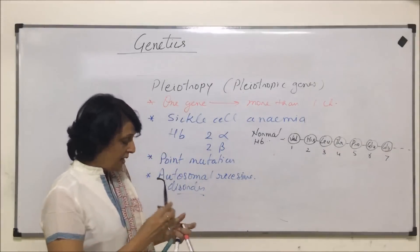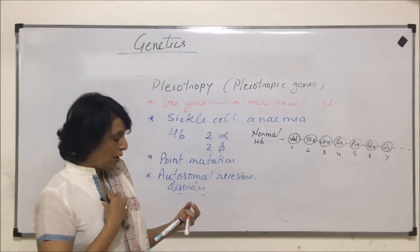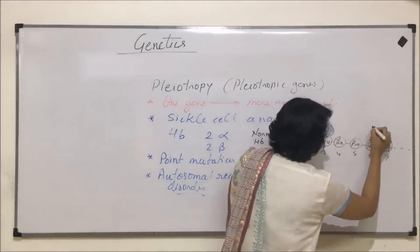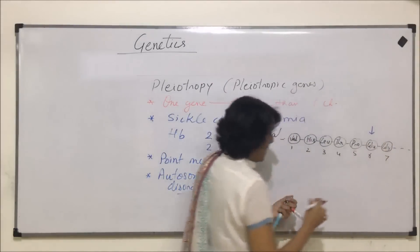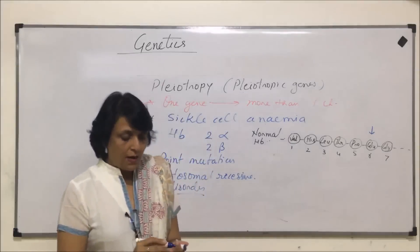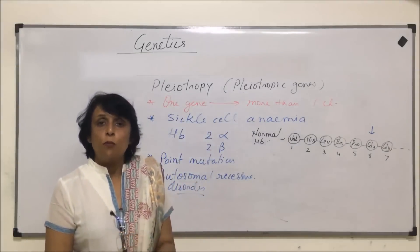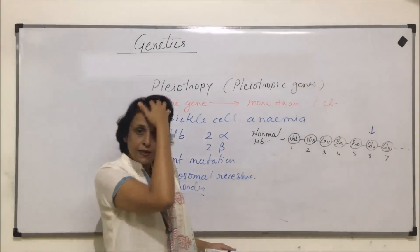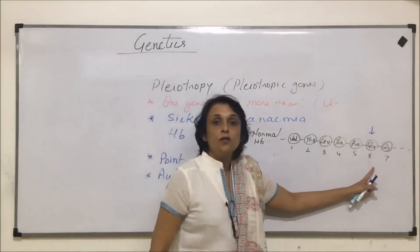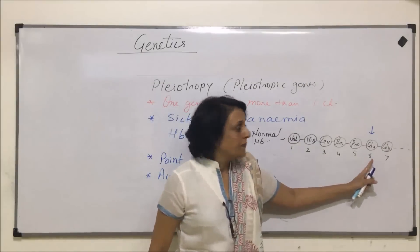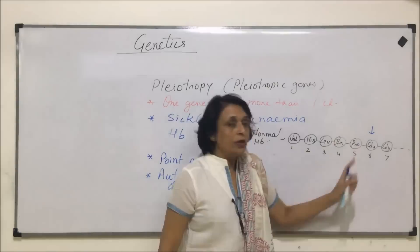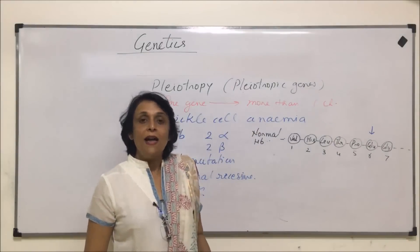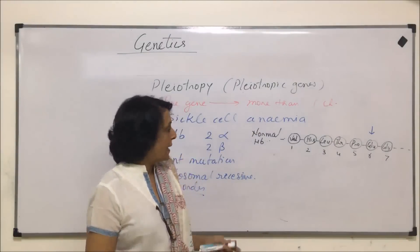In sickle cell anemia, when we say there is a point mutation taking place, at position 6, glutamic acid gets replaced by another amino acid.